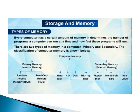There are 2 types of memory in a computer. Every computer has a certain amount of memory, which determines the number of programs it can run at a time and how fast those programs will run. The 1st type is primary memory and the 2nd type is secondary memory.